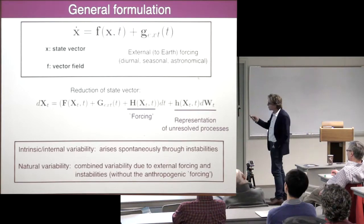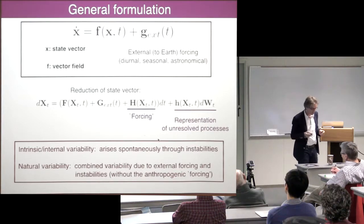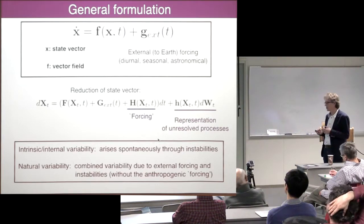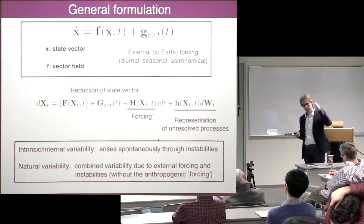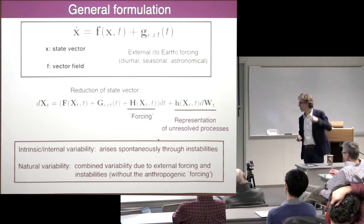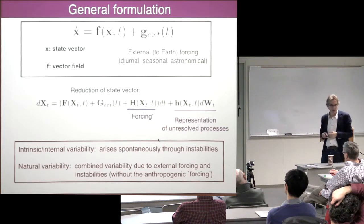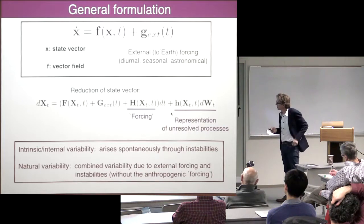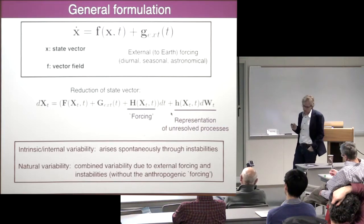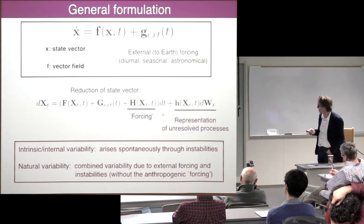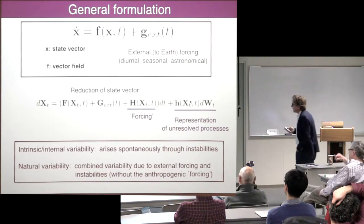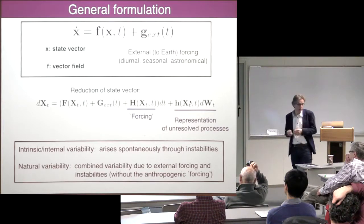You have unresolved processes which you represent as noise. It's quite modern to represent many processes which you cannot resolve anyway — remember, we go from a 10,000-kilometer scale, and in the ocean the smallest relevant scale is in the order of meters to centimeters. So you're always left with a problem of representation, and you can do that in terms of deterministic parameterizations, or you can do it in a stochastic way. This is basically where you end up, and this is what you want to study with dynamical systems methods — particularly when you look at statistics, you're interested in how densities of trajectories propagate in time.